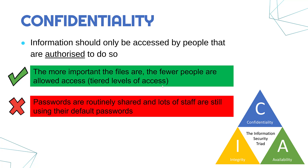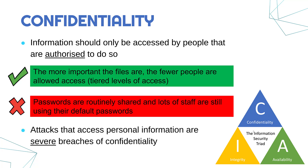An example of where this is done badly: passwords being routinely shared around and lots of staff still using their default passwords. That's where somebody who is not authorised might gain access to something they shouldn't. A default password is where the original password hasn't been changed — often quite weak, something like password123. Attackers often target confidentiality, and attacks that access personal information are what you'd describe as severe breaches of confidentiality — anything personal makes the level of severity higher.